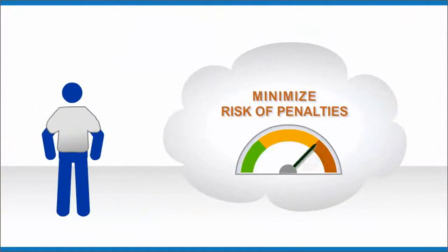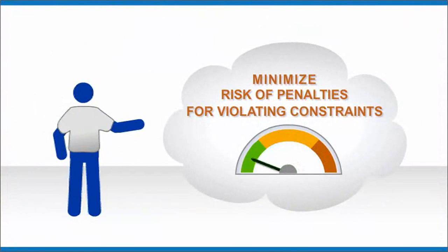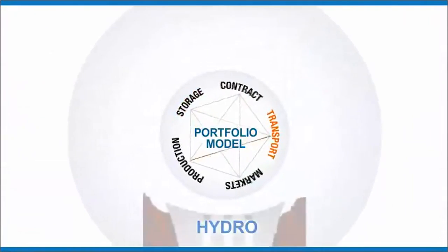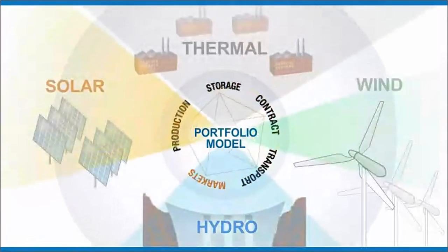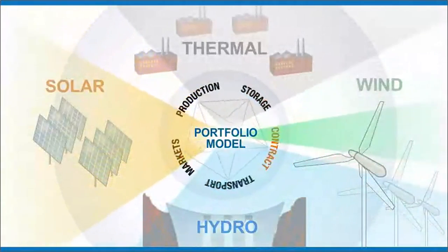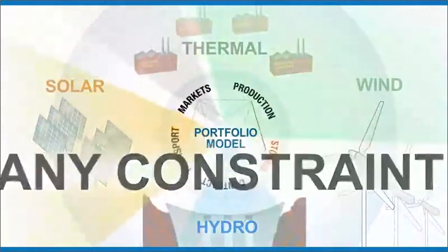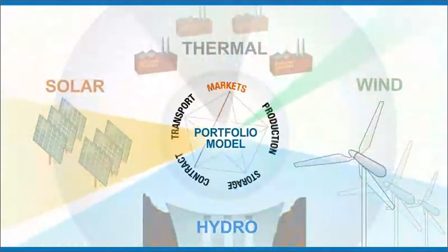Moreover, you can minimize your risk of penalties. Here's how it works. OpenLink provides a very robust model based on a blend of deterministic and stochastic methods that can capture any commodity, any constraint, any market, across the portfolio.